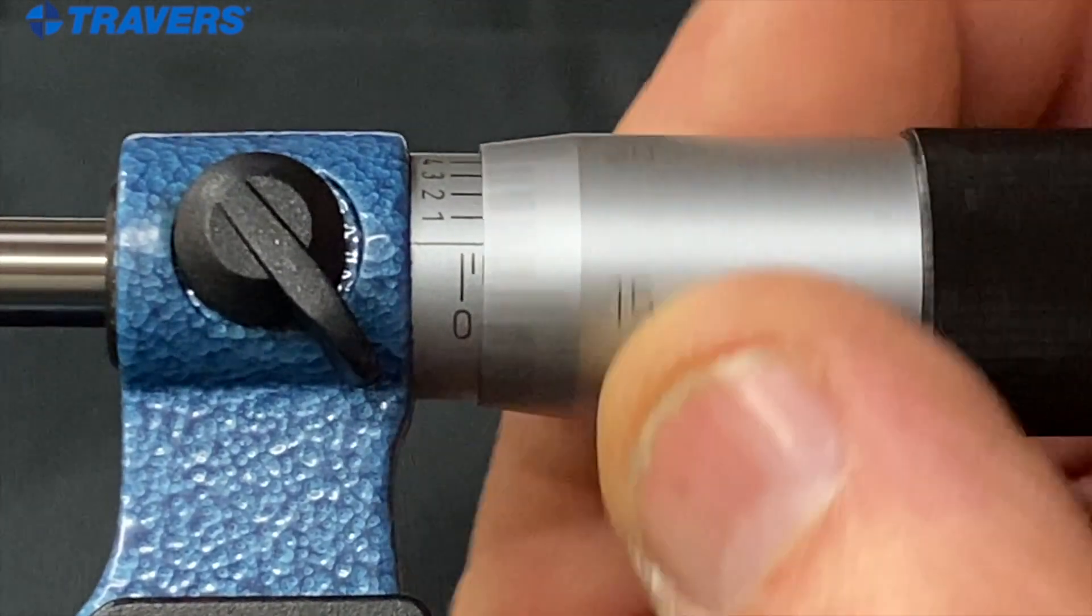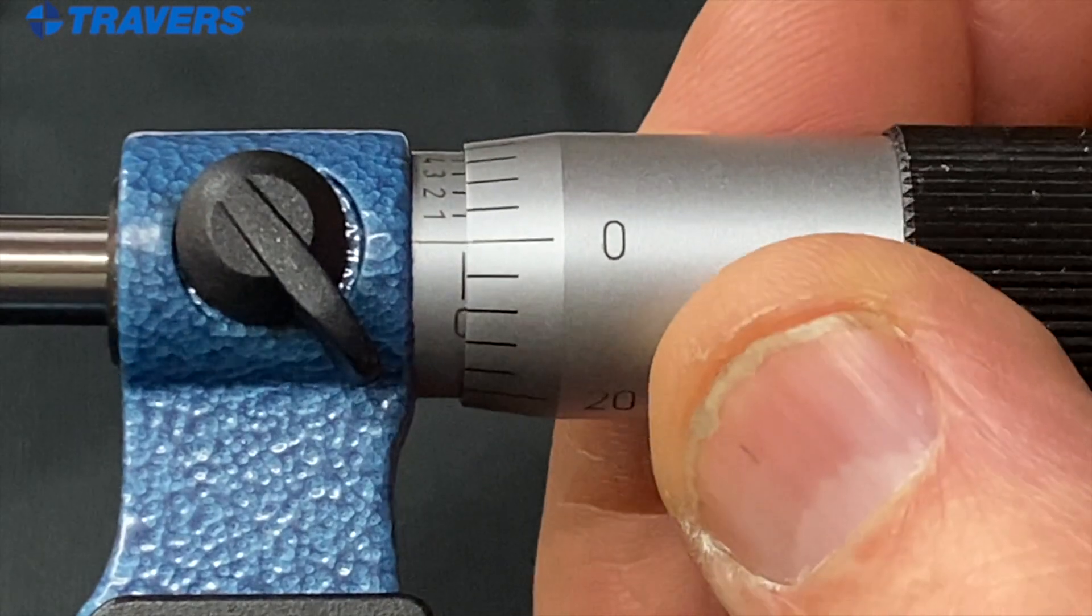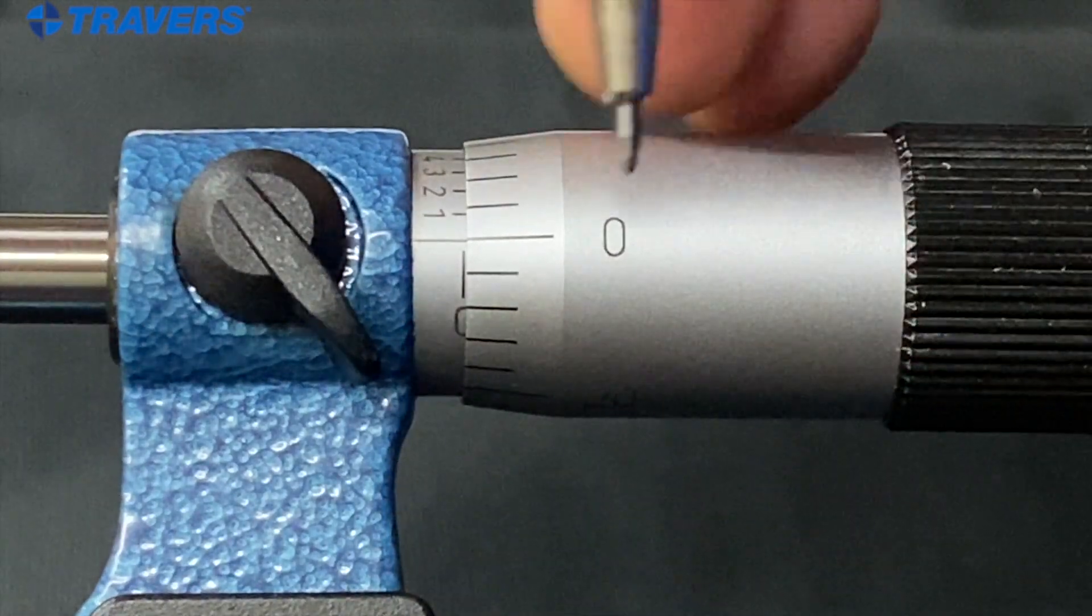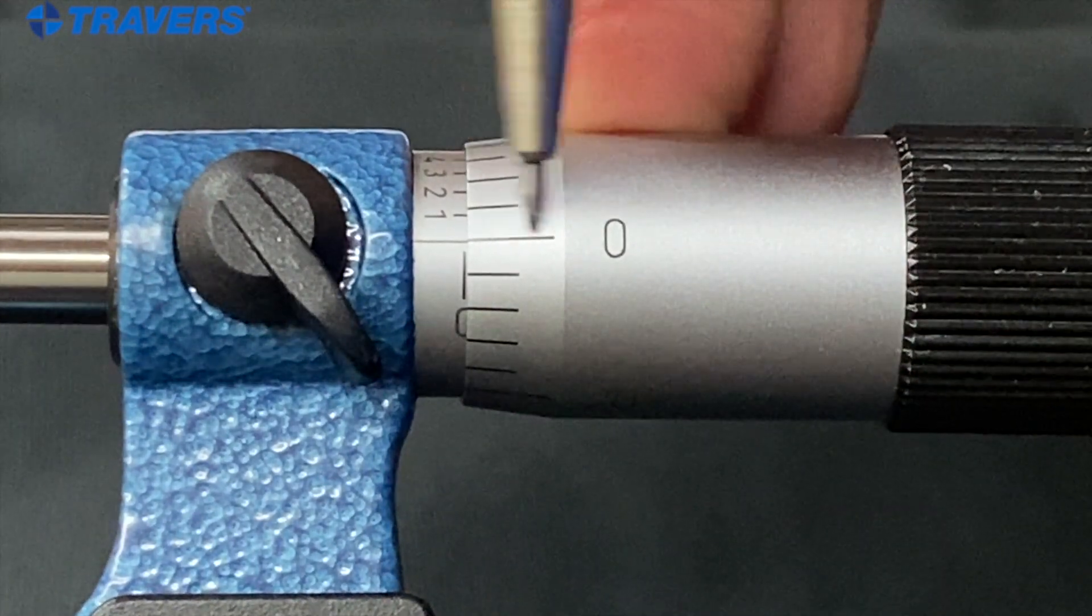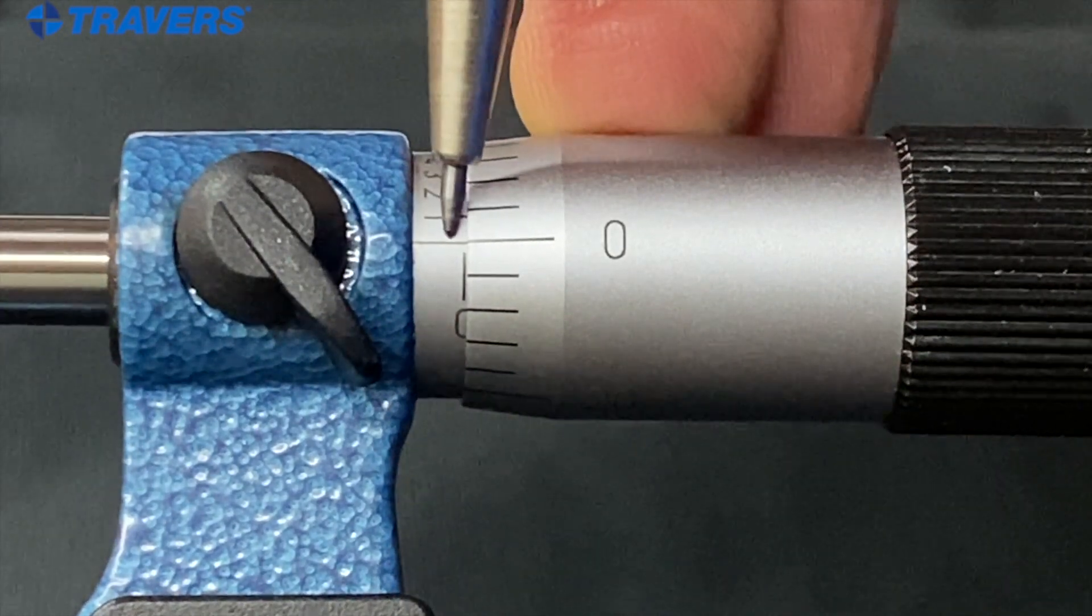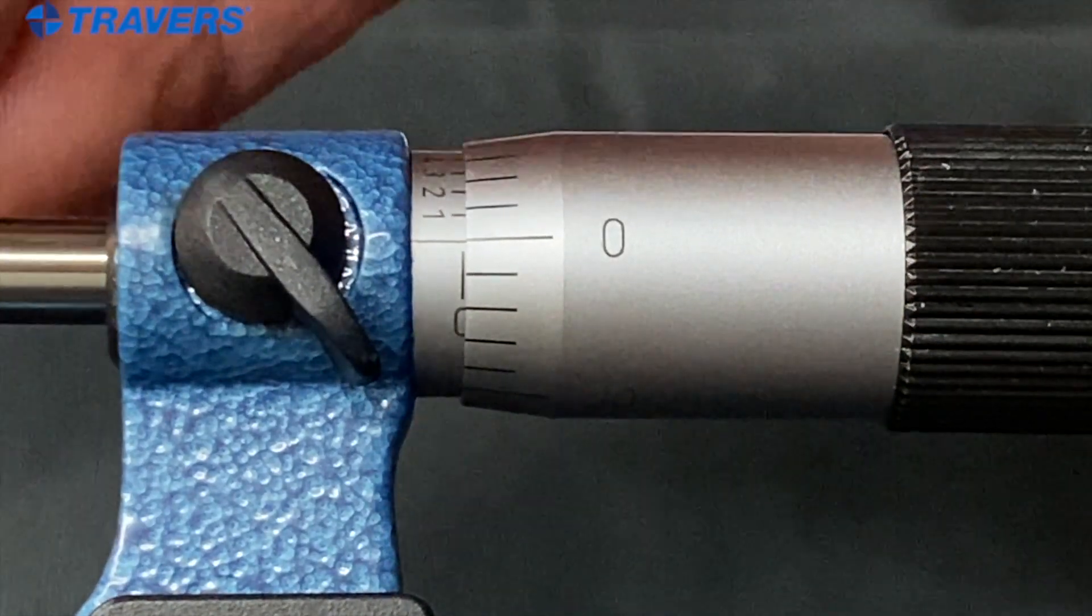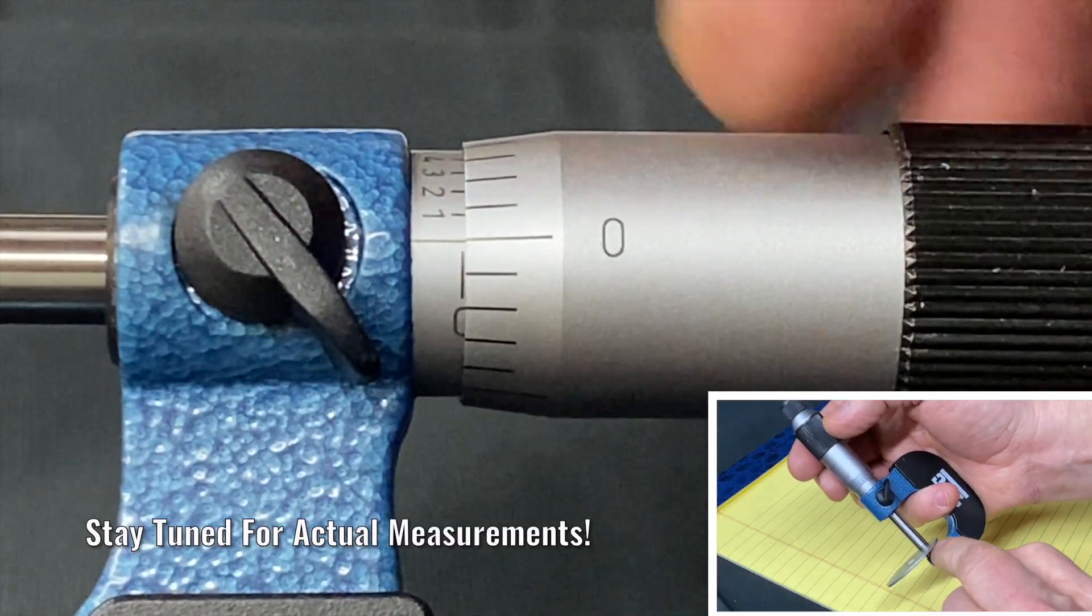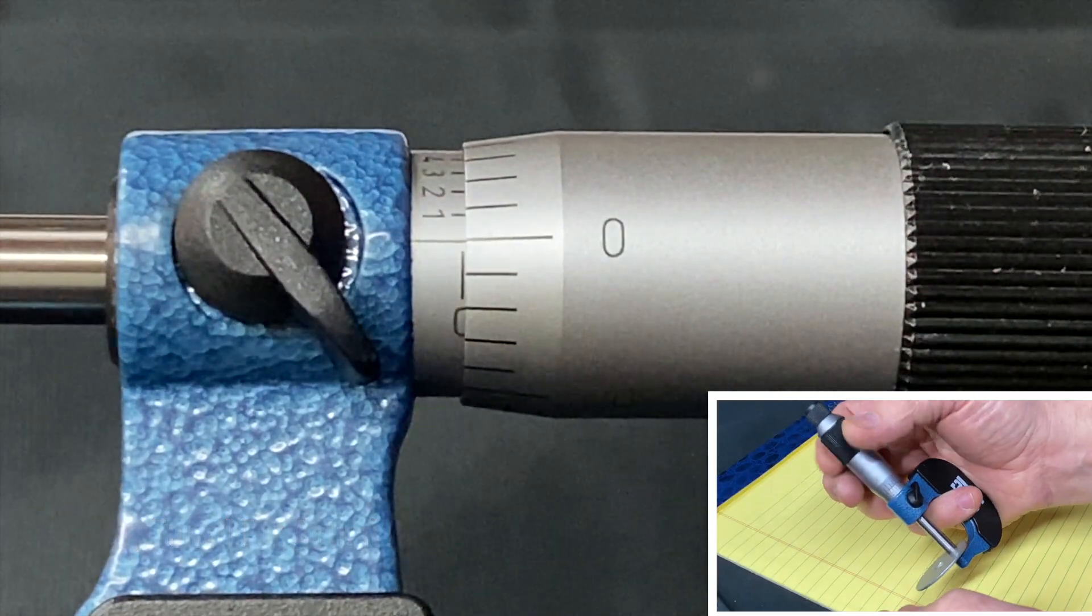And notice when I bring this all the way down, the zero and the line next to the zero line up with this line on the sleeve. So I'm not measuring anything, there's nothing in this micrometer, so that's measuring zero.